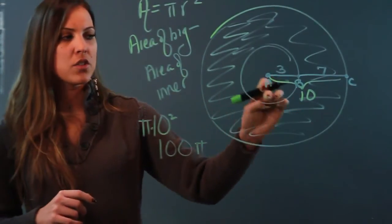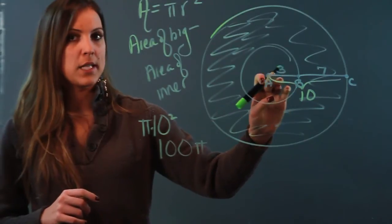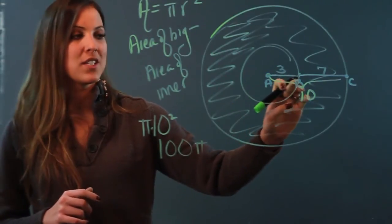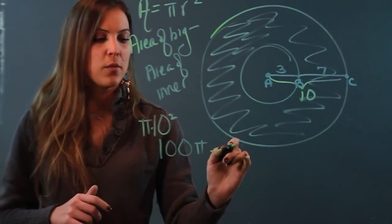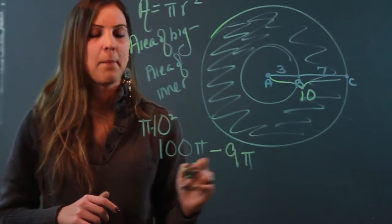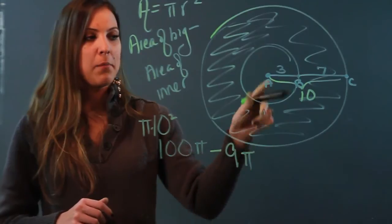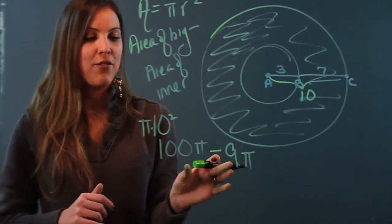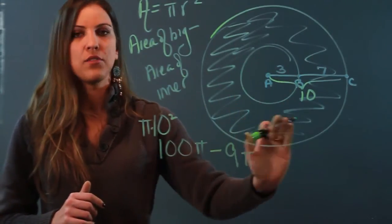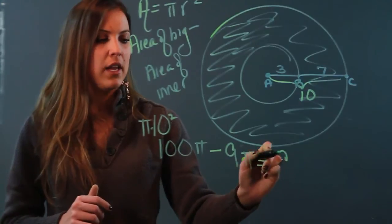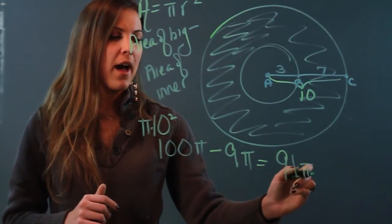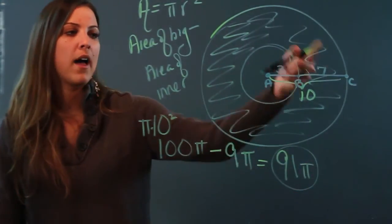The area of my smaller circle is going to be, 3 is my radius now. So, it's 3 squared, which is 9 times pi. So, I'm doing 100 pi minus 9 pi. 100 pi was the area of my huge circle. 9 pi was the area of my inner circle. And if I subtract them, I'll end up with the area of just the shaded part. So, that's going to give me 91 pi as the area of my donut shape.